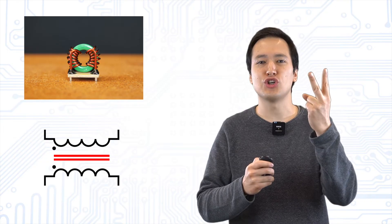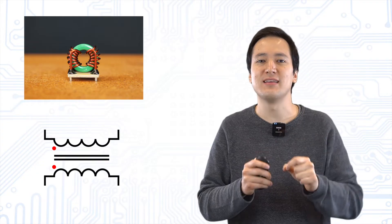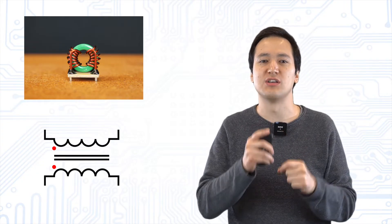The two lines in the circuit symbol show a core made of magnetic material and the dots indicate the winding direction which is very important.